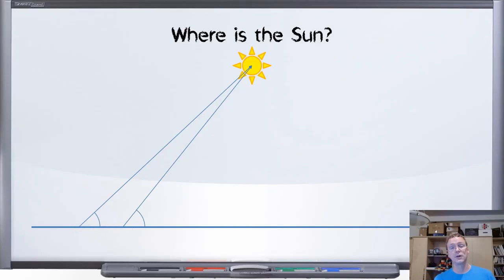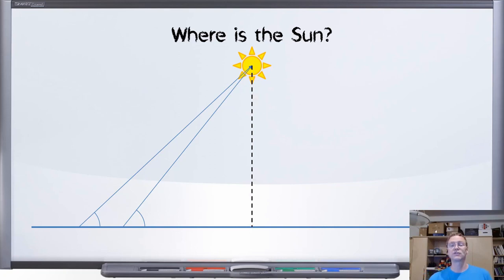And if we know the distance between those two cities, we can then using those angles, figure out exactly where the sun is. And from that, we will be able to measure the height of the sun circling above the flat earth.